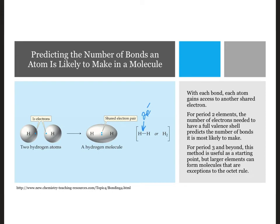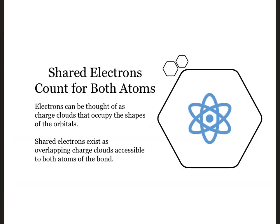This estimation method works well for the period 2 elements, but period 3 elements and beyond can sometimes violate the octet rule. When we're forming bonds, it's important to realize that the electrons in bonds count towards fulfilling the octet rule of both atoms involved in the bonding since they are shared.